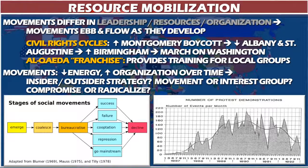The second group of theories is called resource mobilization, associated with political sociologist Charles Tilly. Movements differ in leadership, resources, and organization, which go up and down over time in cycles — there's a buildup or ramping up to a revolution. Usually there's a first attempt that fails, the revolutionaries learn, find allies, assemble resources, and make another attempt until they break through. In Russia, the 1905 revolution after the Russo-Japanese War kind of failed but served as the dress rehearsal for the big revolution in 1917.